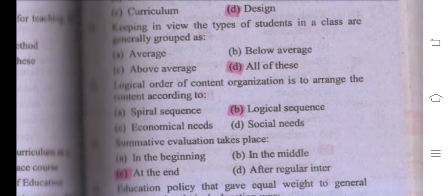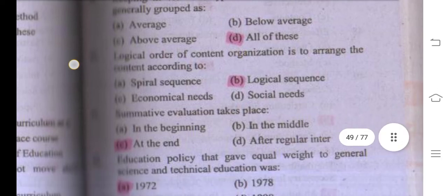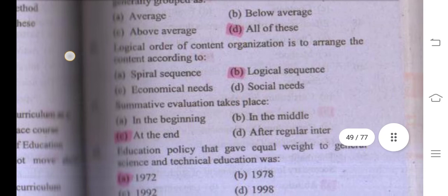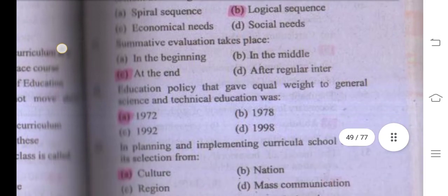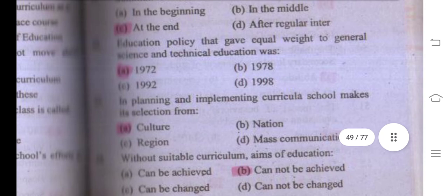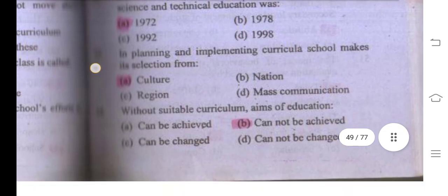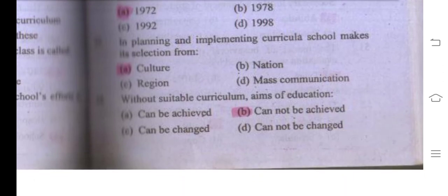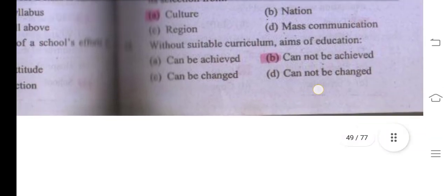The logical order of content organization means arranging content according to a logical sequence. Summative evaluation takes place at the end. The education policy that gave equal weightage to general science and technical education was in 1972. In planning and implementing curricula, the school makes its selection from culture. Without a suitable curriculum, the aims of education cannot be achieved.